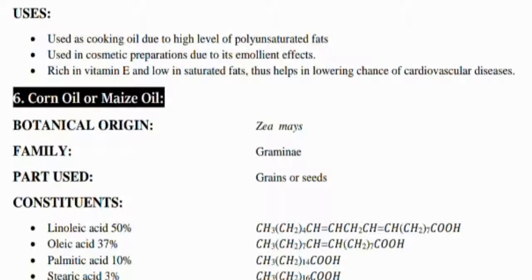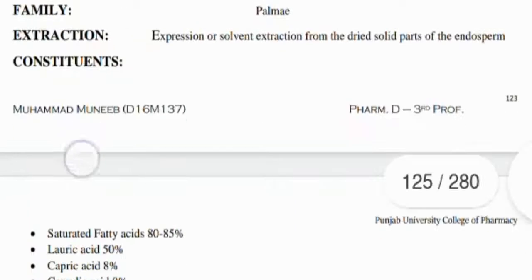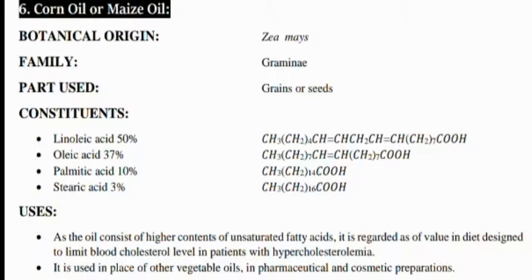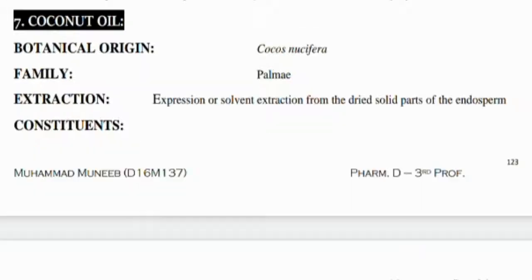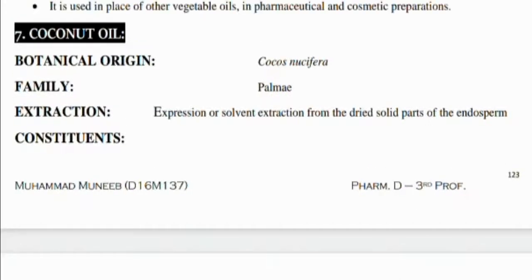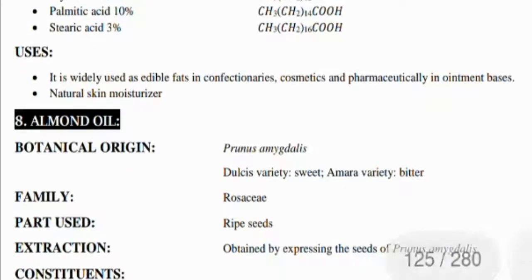Another one is corn oil, also called maize oil, known as Zea mays, from the Gramineae family, with grains or seeds as the part used, basically used like other vegetable oils. Another oil is coconut oil, known as Cocos nucifera, from the Palmae family, widely used as edible fat in confectionery, cosmetics, and as an ointment basis.